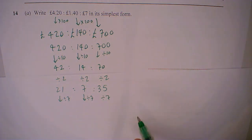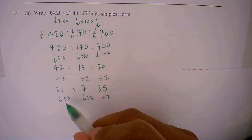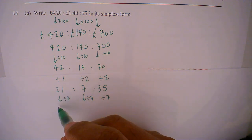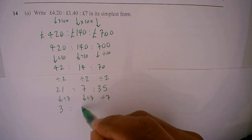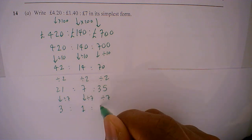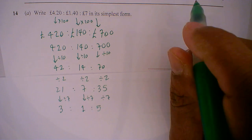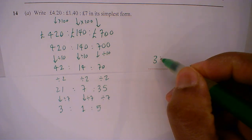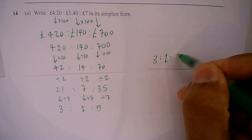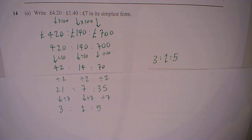And so my answer becomes: 7 goes into 21 three times, goes into 7 once, and 35 five times. So my final answer is 3 to 1 to 5.